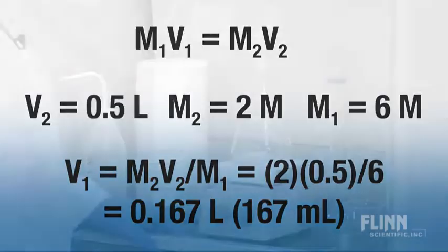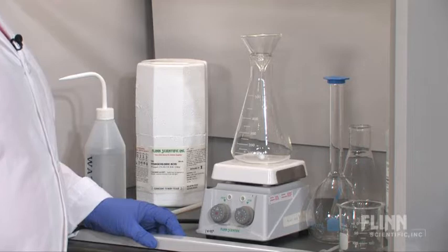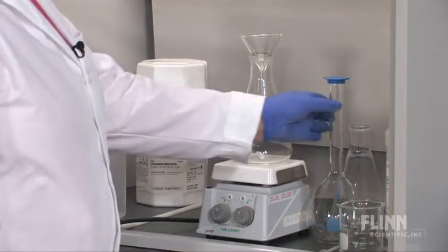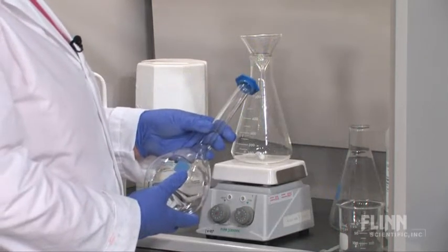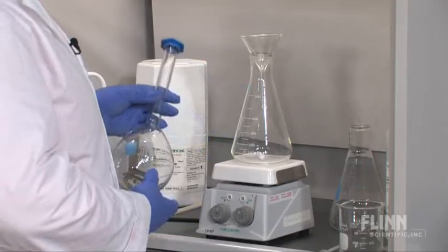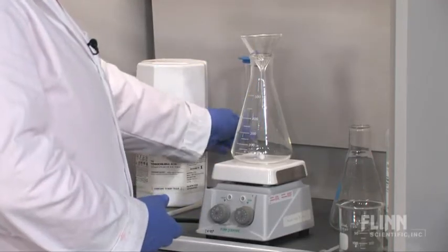Gather the glassware and equipment you'll need. If the acid is for a quantitative analytical experiment such as a titration, use a volumetric flask. In most cases, however, an Erlenmeyer flask will provide the needed accuracy.